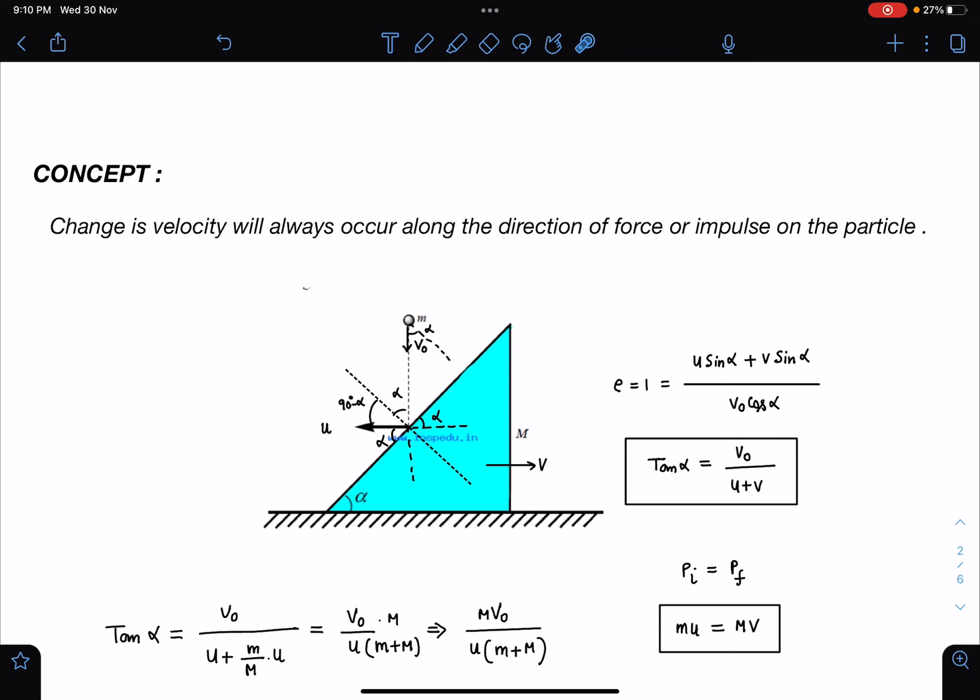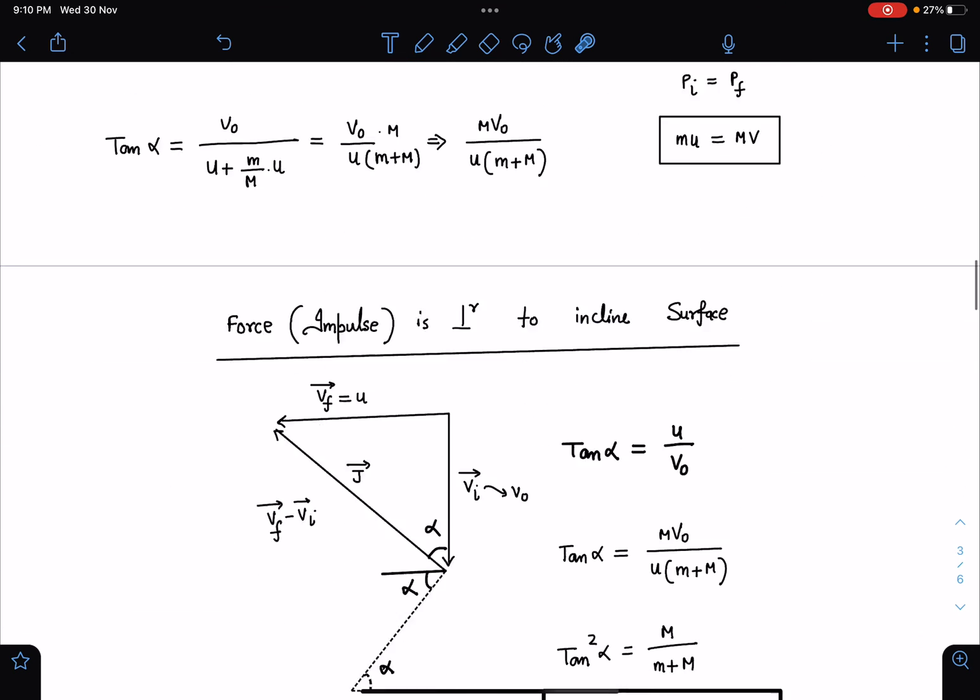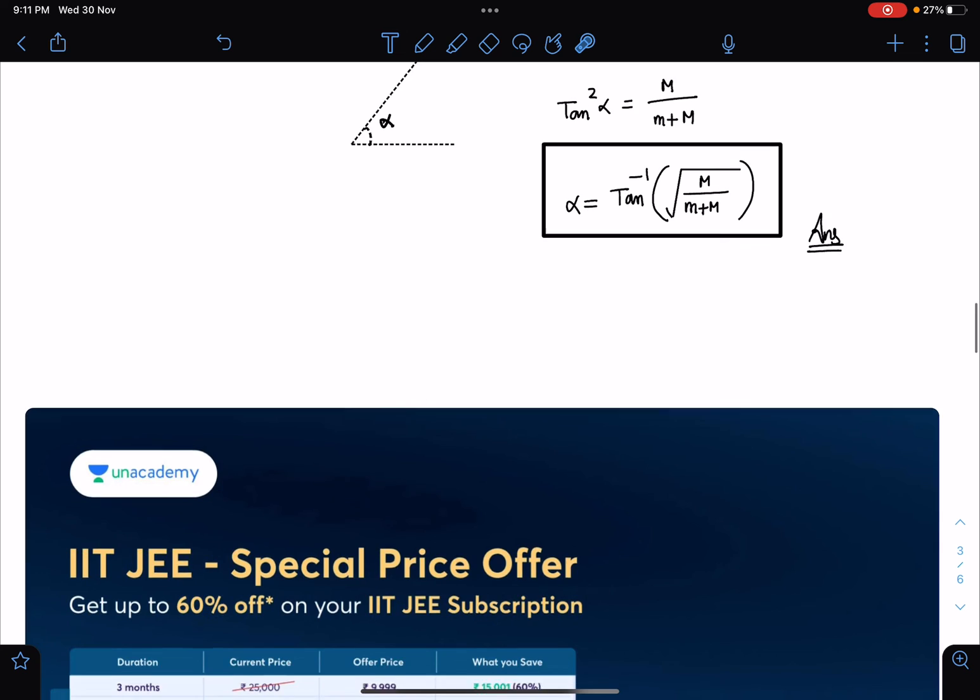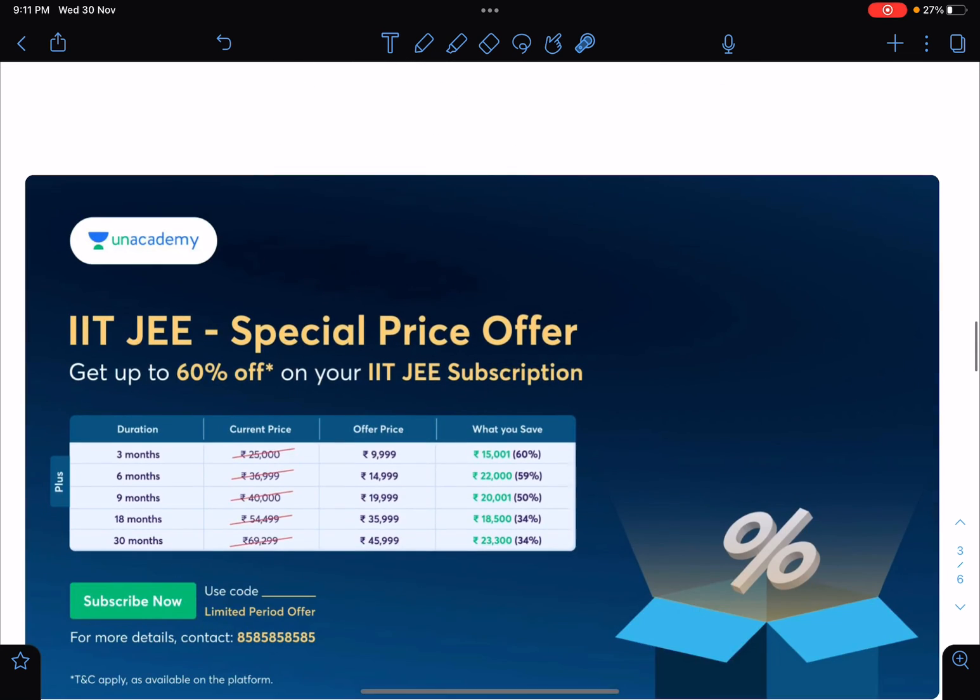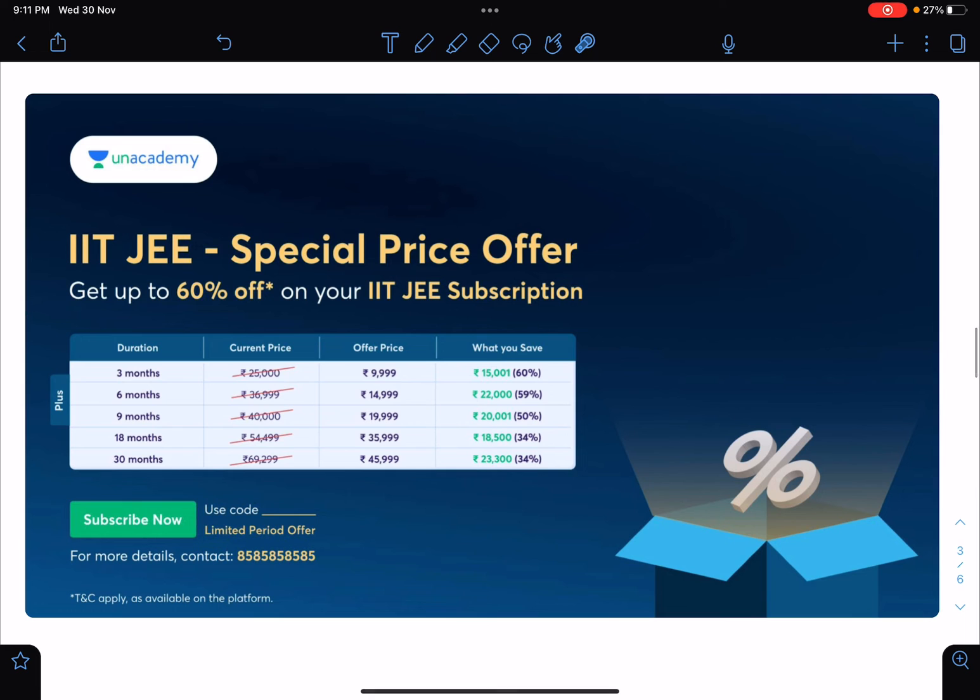You can use conservation of kinetic energy also in this particular case, but you have to solve a quadratic equation. Instead of that you can use this method. Guys, this is the special offer and today is the last day for it. Some of you can get great benefits: 30% off for 3 months, 6 months, 9 months, 18 months, or 30 months.